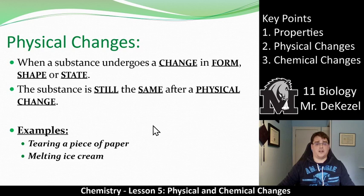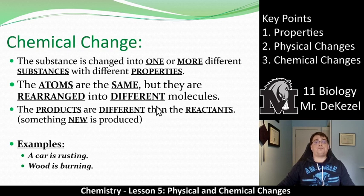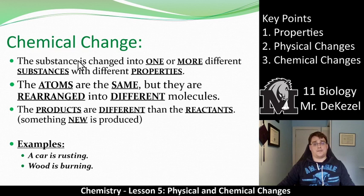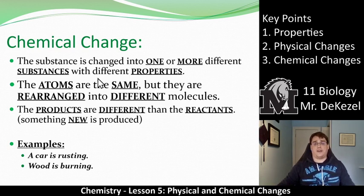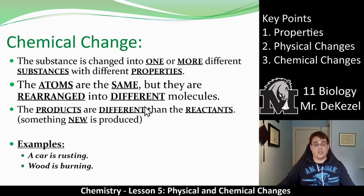The glass is still clear, the plastic is still bendy — the properties are still the same. When we have a chemical change, the substance is changed into one or more different substances, and these have different properties. So although the atoms are the same — and we'll get into what atoms are later — they're rearranged into different molecules. They look completely different. The products are different than the reactants. The beginning is different than the final product. Something new is produced.